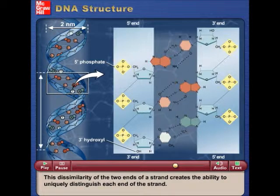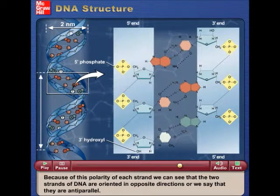This dissimilarity of the two ends of a strand creates the ability to uniquely distinguish each end of the strand. Because of this polarity of each strand, we can see that the two strands of DNA are oriented in opposite directions, or we say that they are anti-parallel.